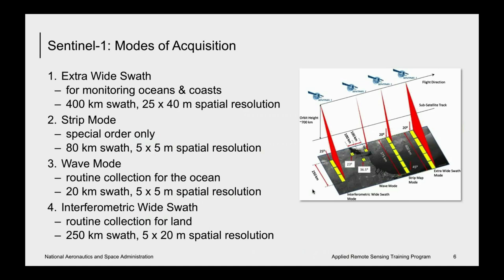Sentinel-1 has four different modes of acquisition. The first is the extra-wide swath mode, primarily for monitoring oceans and coasts, with a 400-kilometer swath and a spatial resolution of 25 by 40 meters. Strip mode is special order only, with an 80-kilometer swath and 5 by 5 meter spatial resolution. Wave mode is routinely collected for the oceans with a 20-kilometer swath and 5 by 5 meter resolution. Finally, the interferometric wide swath mode has routine collections over land, a 250-kilometer swath, and a spatial resolution of 5 by 20 meters.